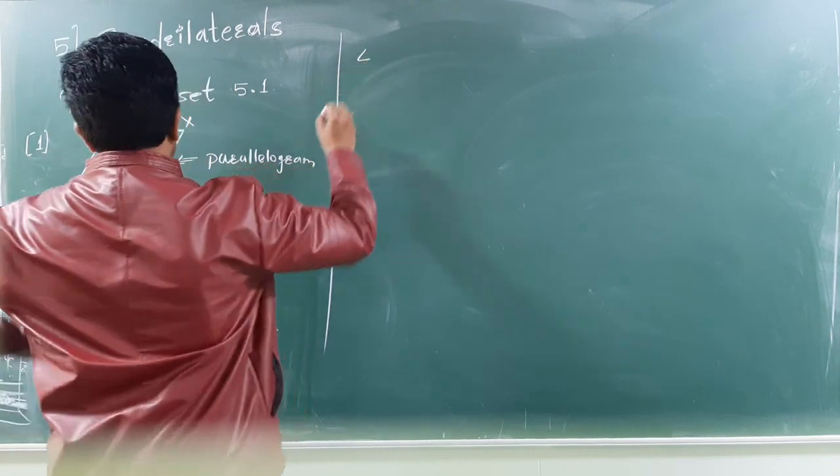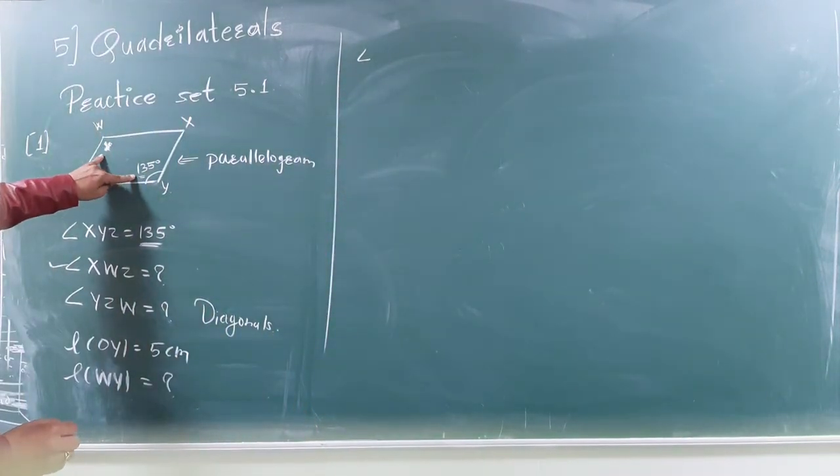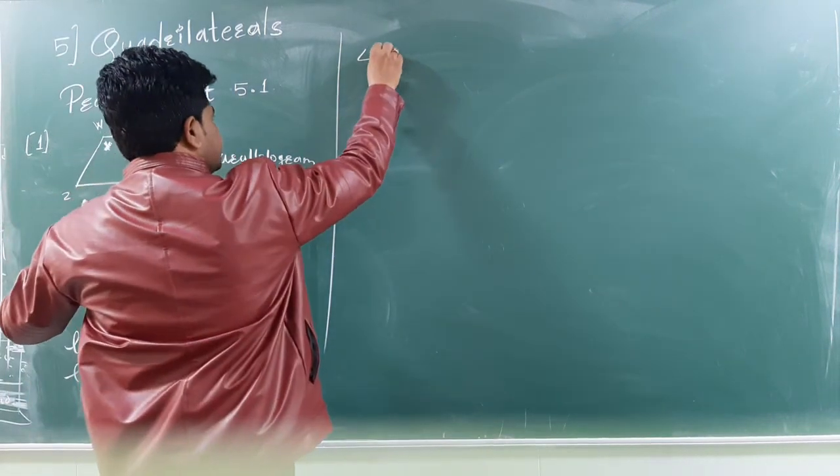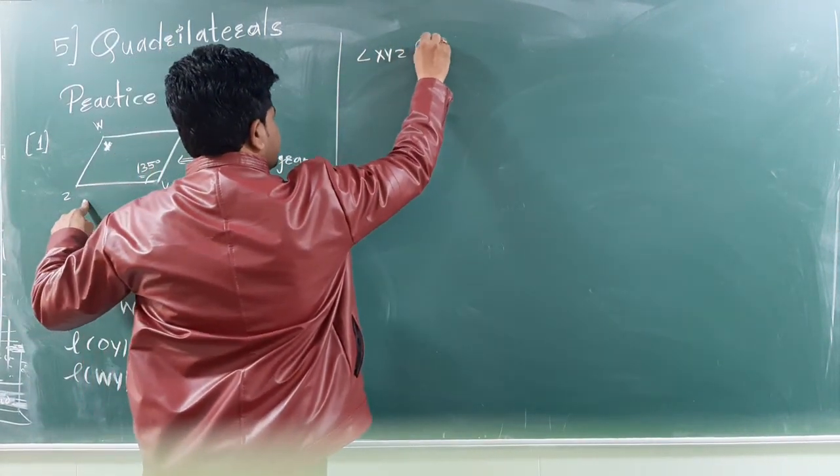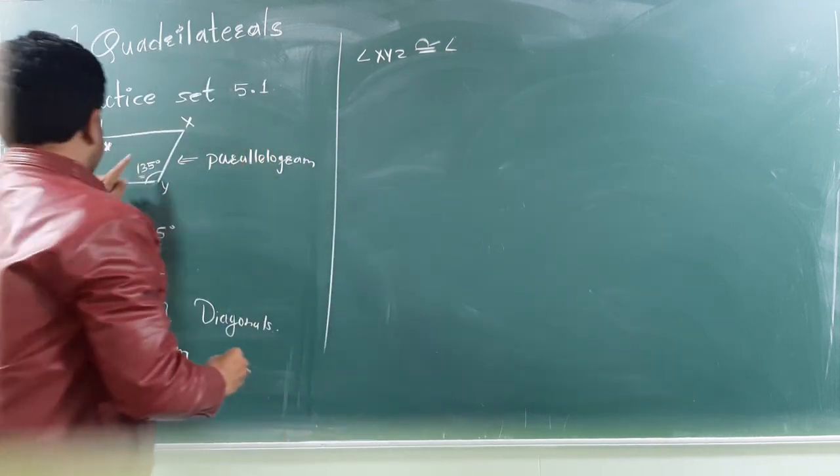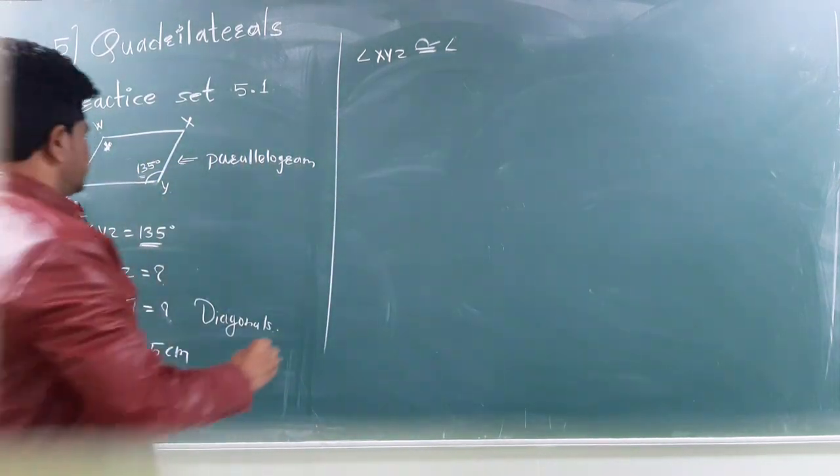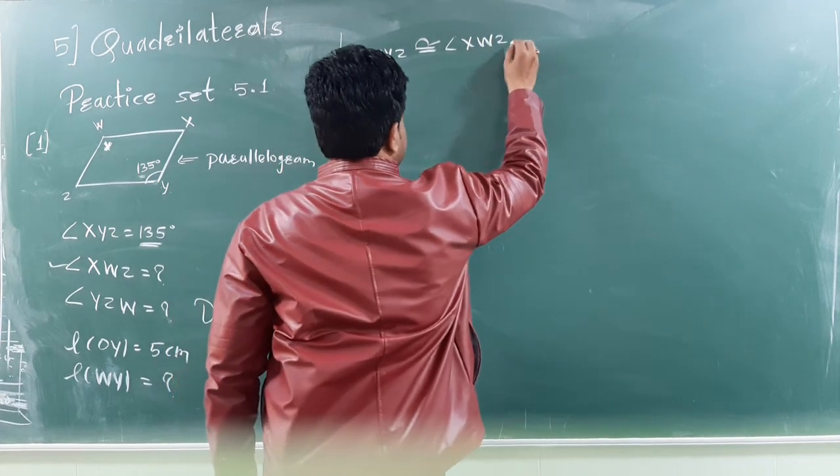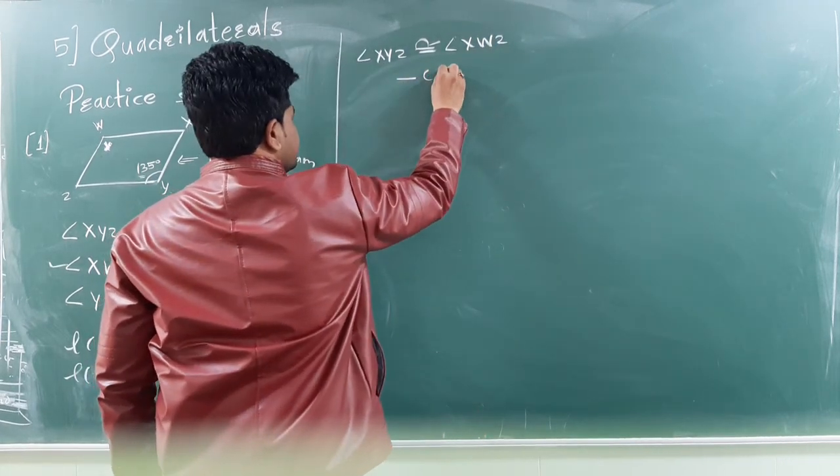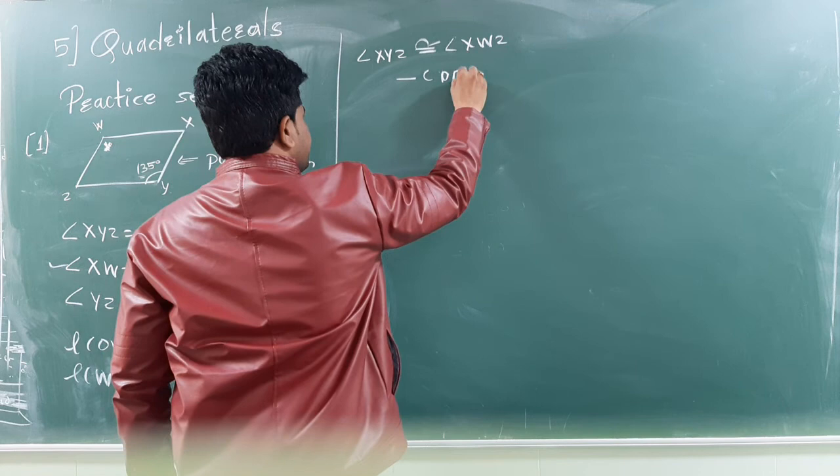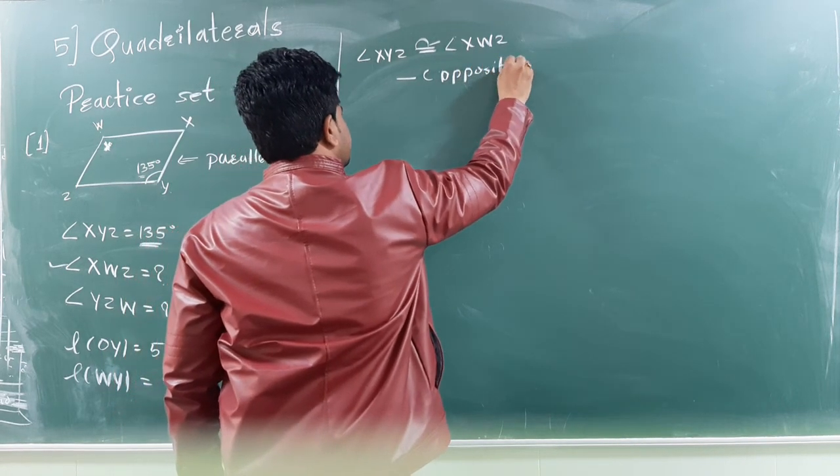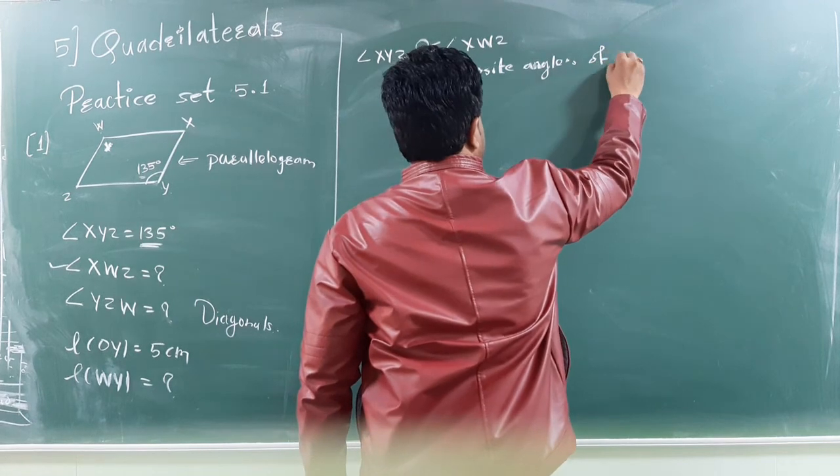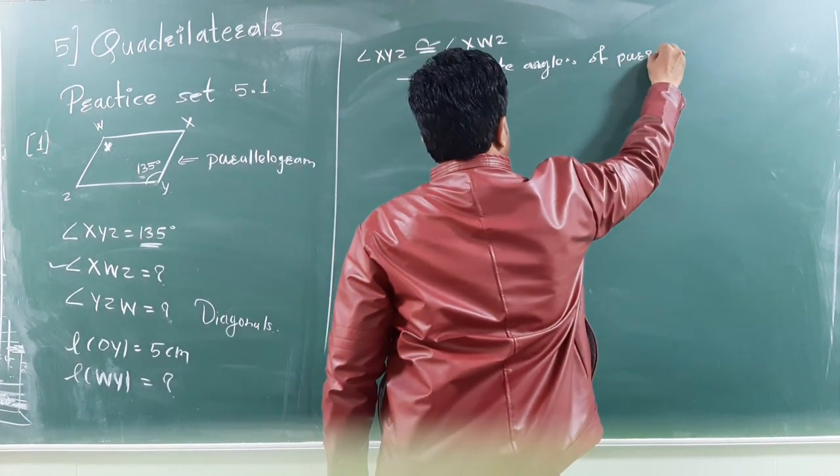As we know, the opposite angles of parallelogram are congruent. That is why we can write here, angle XYZ is congruent with angle XWZ. So, this is a property of parallelogram, opposite angles of parallelogram.